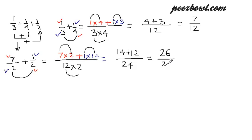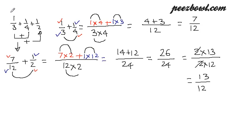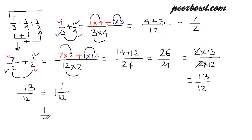Let us simplify further. 26 can be written as 2 multiplied by 13, and 24 can be written as 2 multiplied by 12. The 2s cancel each other, giving us 13/12. So the final result of adding 1/3 + 1/4 + 1/2 is 13/12. Since this is an improper fraction, it can be written as the mixed number 1 and 1/12. That is the final answer.